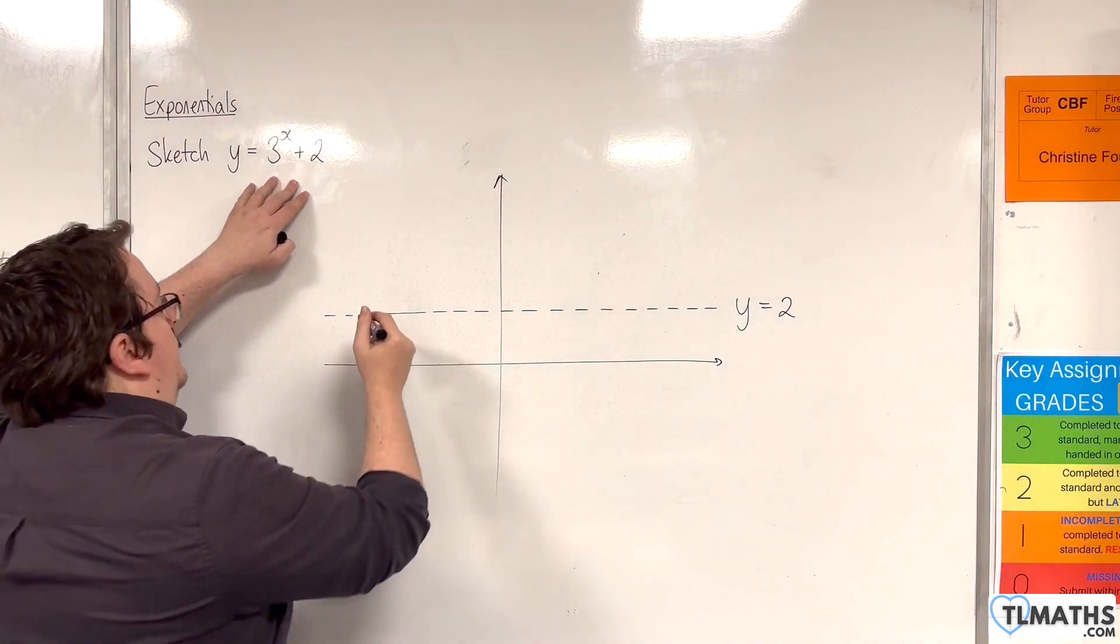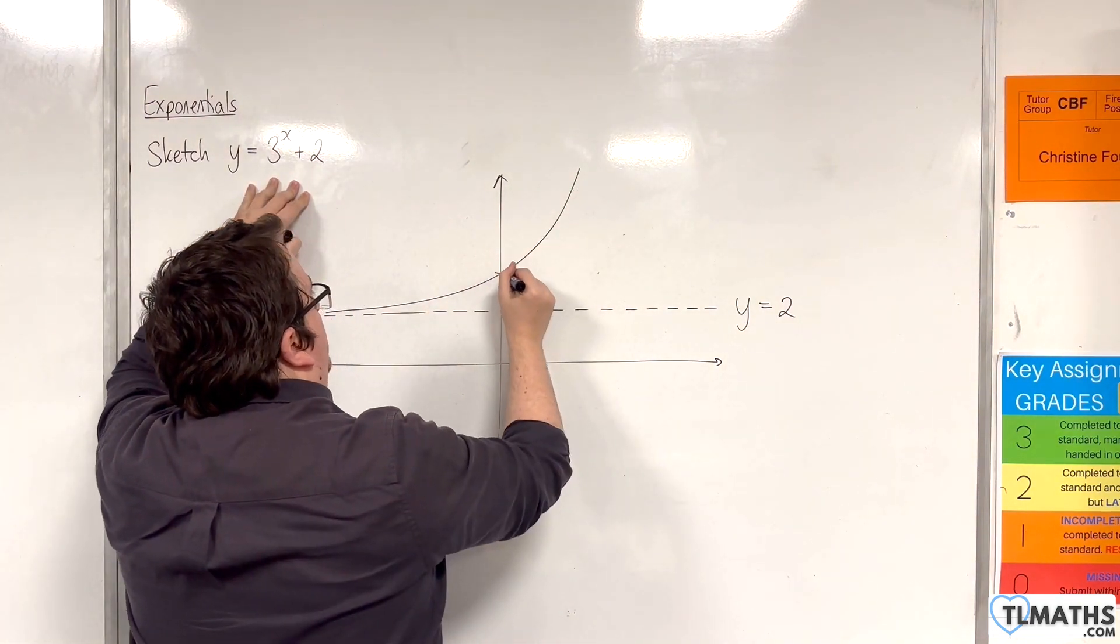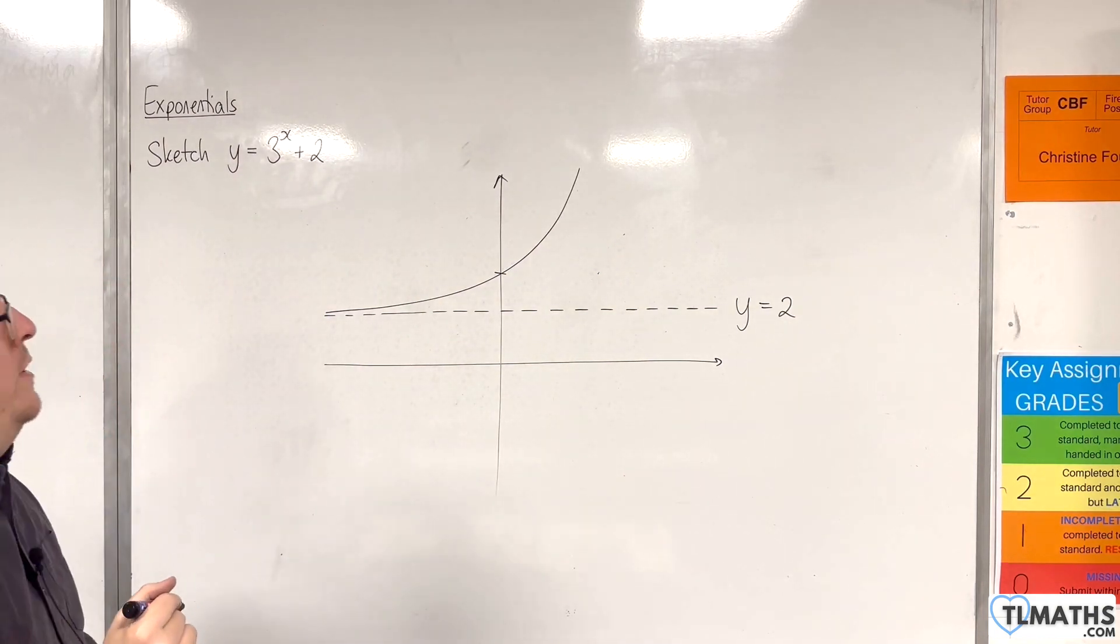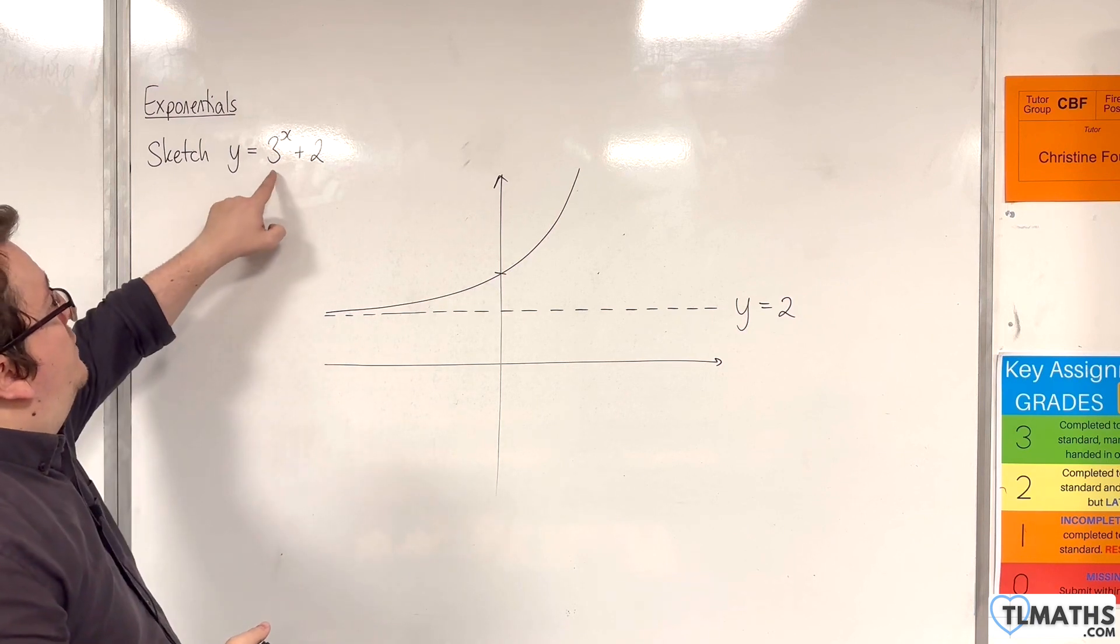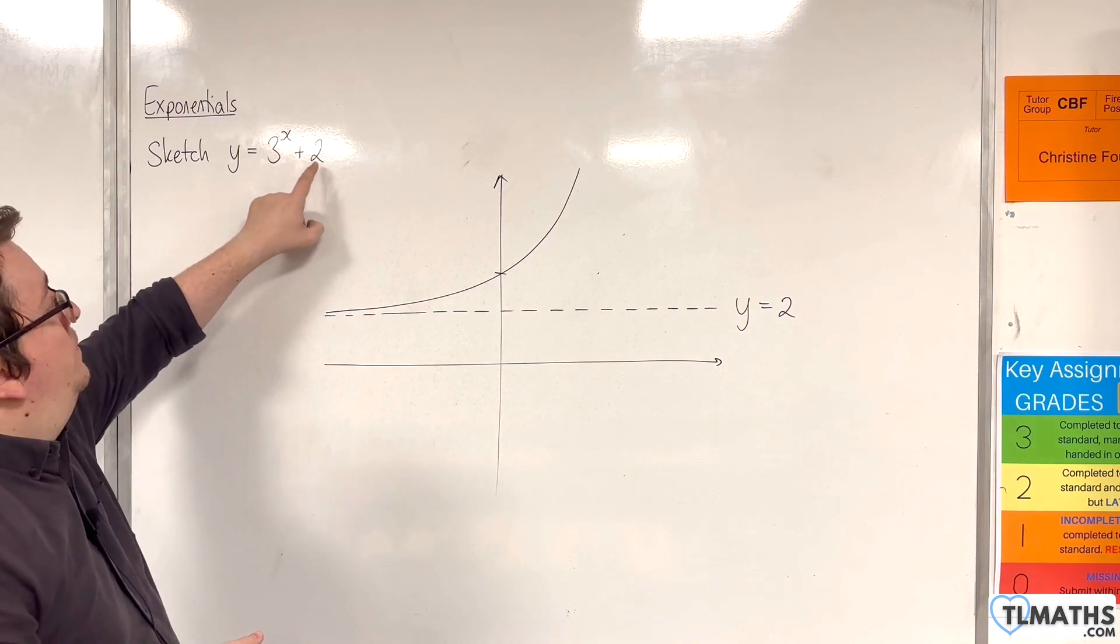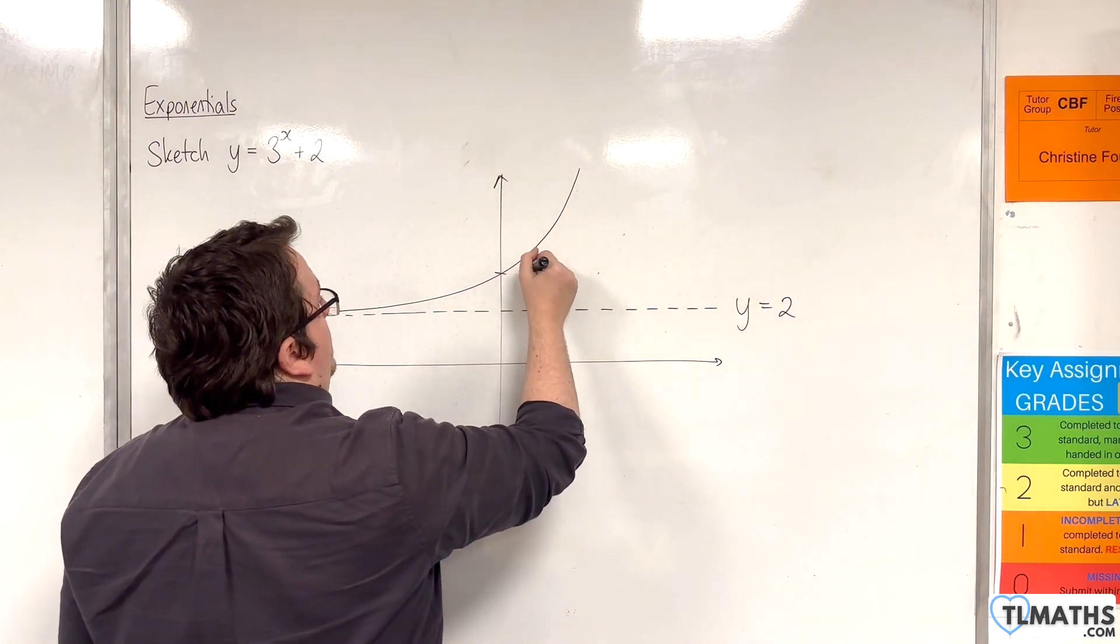And then this curve will look like this. The only other point you're going to be interested in is where it crosses the y-axis, which is when x is 0. So we'll have 3 to the 0 plus 2. 3 to the 0 is just 1, and so this point would have to be 3.